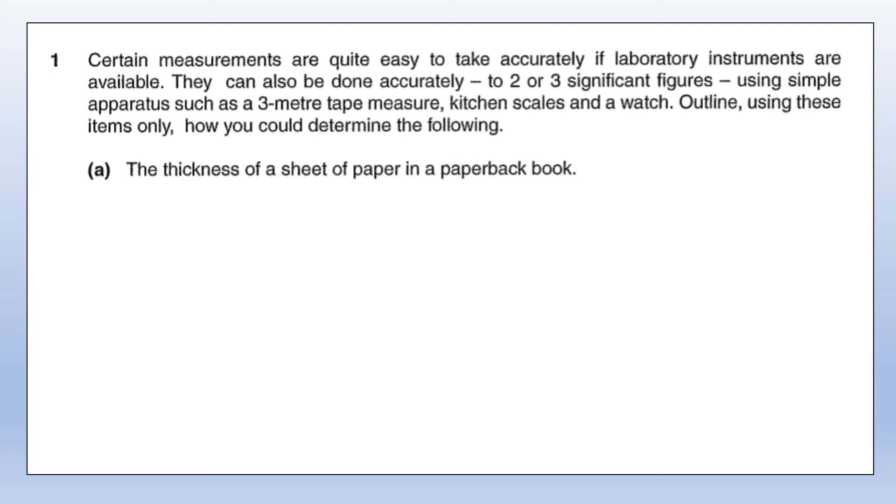In this video I'm going to take a look at the June 2006 unifying concepts paper from OCR, which mimics quite accurately the unifying concepts paper in the new specification. Let's start by having a look at some measurements and taking them as accurately as possible. We've got three simple measuring devices: a tape measure, kitchen scales, and a watch, which would allow us to measure distance, mass or weight, and time.